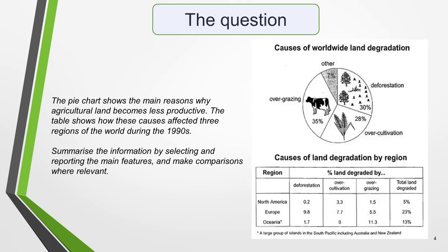Here's our practice question, which includes a pie chart and a table. The pie chart shows the main reasons why agricultural land becomes less productive. The table shows how these causes affected three regions of the world during the 1990s. Summarize the information by selecting and reporting the main features and make comparisons where relevant. Write at least 150 words.